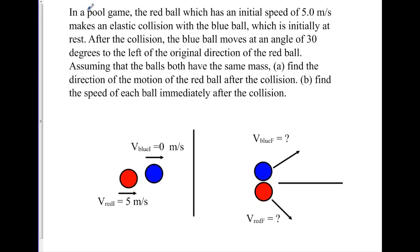We have a pool game. The red ball, which has an initial speed of 5 meters per second, makes an elastic collision with the blue ball, which is initially at rest. After the collision, the blue ball moves at an angle of 30 degrees to the left of the original direction of the red ball. Assuming that both balls have the same mass, find the direction of motion of the red ball after the collision and find the speed of each ball immediately after the collision.